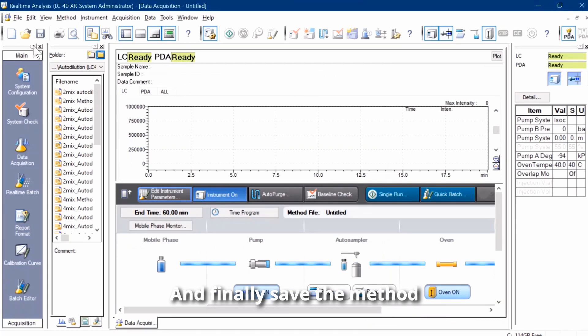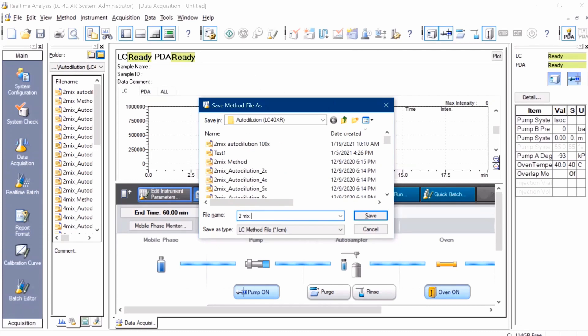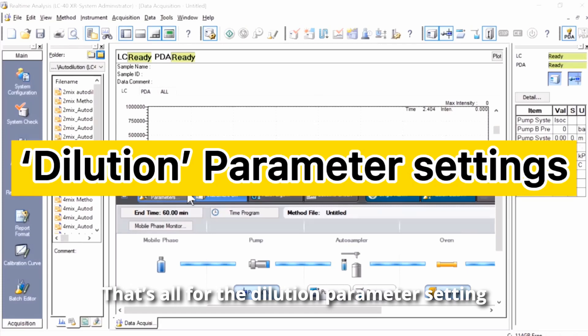Finally, save the method. Key in the method file name, then click Save. That's all for the dilution parameter setting.